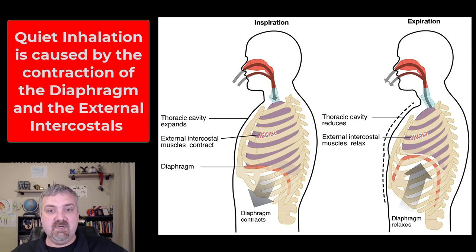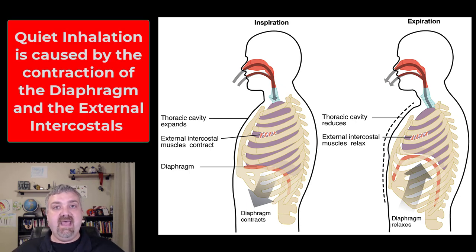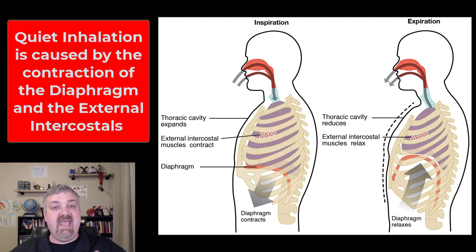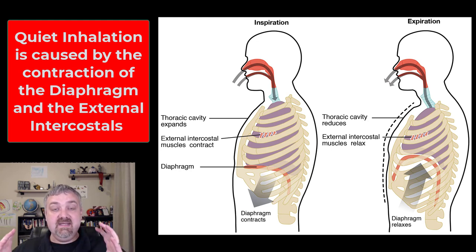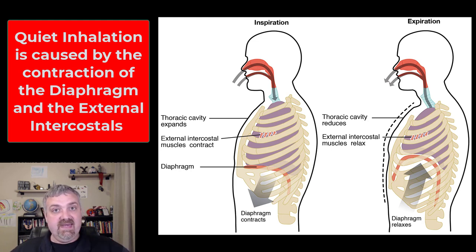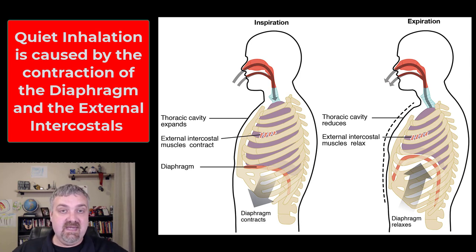On the left-hand side, you can see this person is inspiring or inhaling. During normal quiet breathing, the diaphragm contracts and drops down, and the external intercostals contract, elevating the ribs. So the diaphragm has dropped down and the ribs have expanded. This increases the volume of the thoracic cavity, which decreases the pressure, and air rushes in because of that pressure change. That's how we inhale.